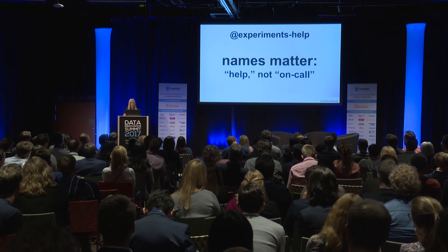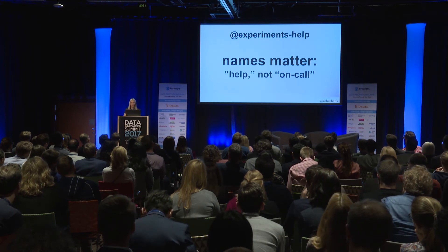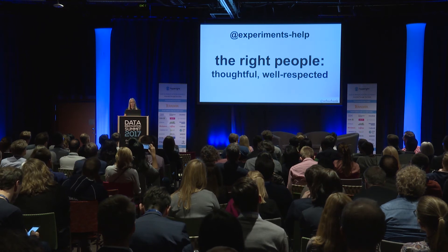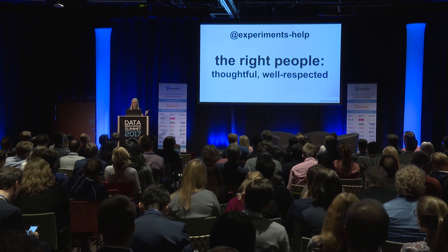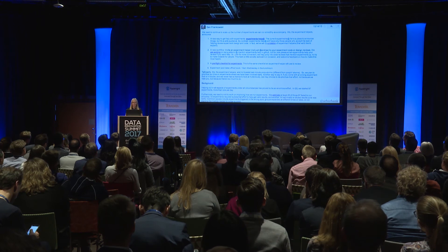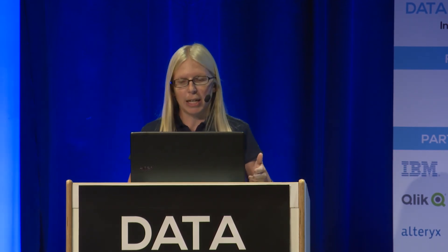Three things made this successful. First, names matter — we thought about calling it 'experiments on call' because we'd have a rotation of people. Nobody likes being on call. Everyone likes helping people. Call it help. Second, get engineers to be partners. Have them realize this will let them move fast and own the process. The badge value of certification helps people want to do this — it avoids data science being seen as a gatekeeper slowing things down. Third, make those initial engineering partners the right people. Choose people who are thoughtful and well-respected, and people will start to say, hey, John's telling me to run an experiment — maybe I should listen to him. In fall 2013, we launched this experiments help program with a new email alias and at-mention.